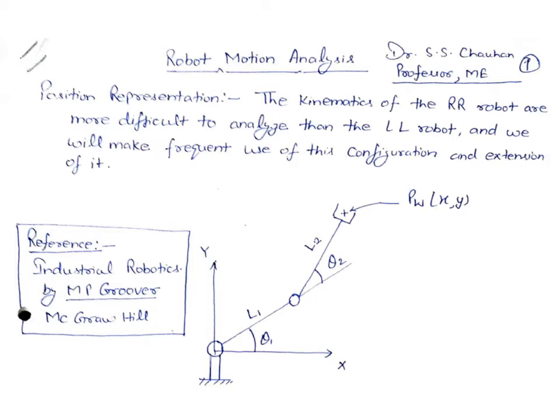If you want to analyze the two-R robot — a robot with two rotational links — it is slightly more difficult to analyze compared to two linear robots. Since this configuration is most frequently used in the manufacturing of robot manipulators, we have to consider this type of linkage system for position representation.